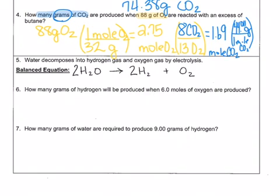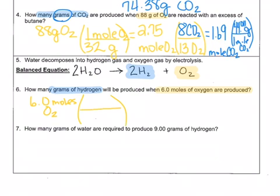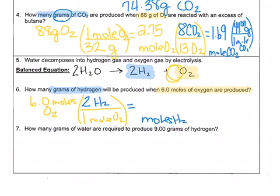For the last problem: how many grams of hydrogen will be produced when 6.0 moles of oxygen are reacted? My given — 6.0 moles of oxygen — is highlighted in yellow, and the grams of hydrogen I want is highlighted in blue. Since I'm already in moles, I can use my mole-to-mole ratio, which says 1 mole of oxygen produces 2 moles of H₂. That gives me 12 moles of H₂.